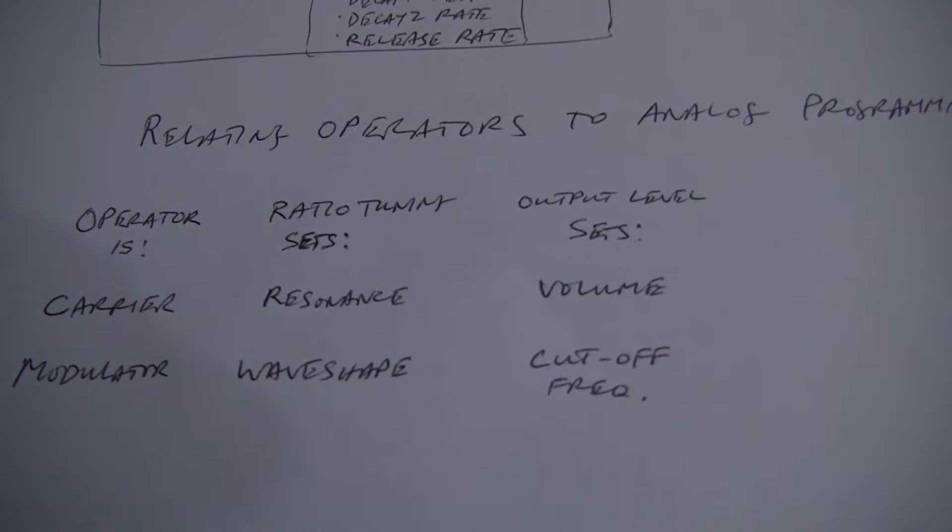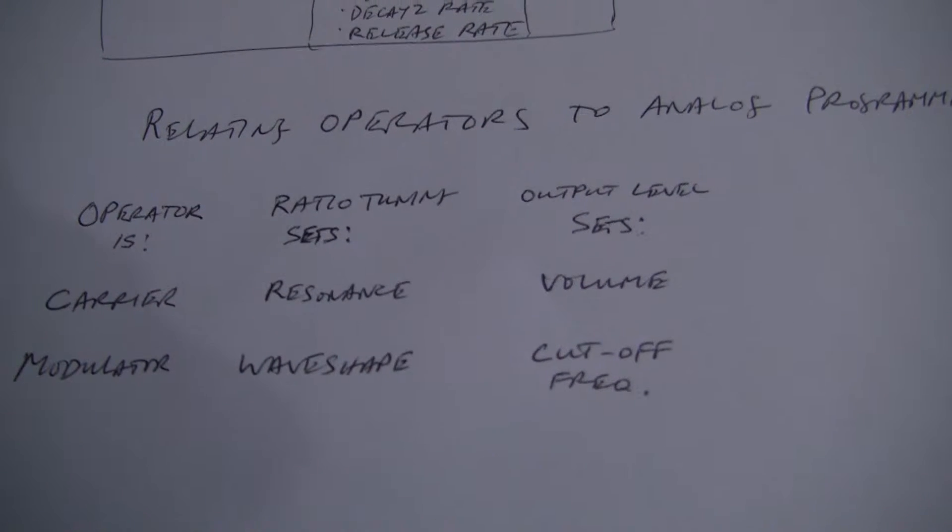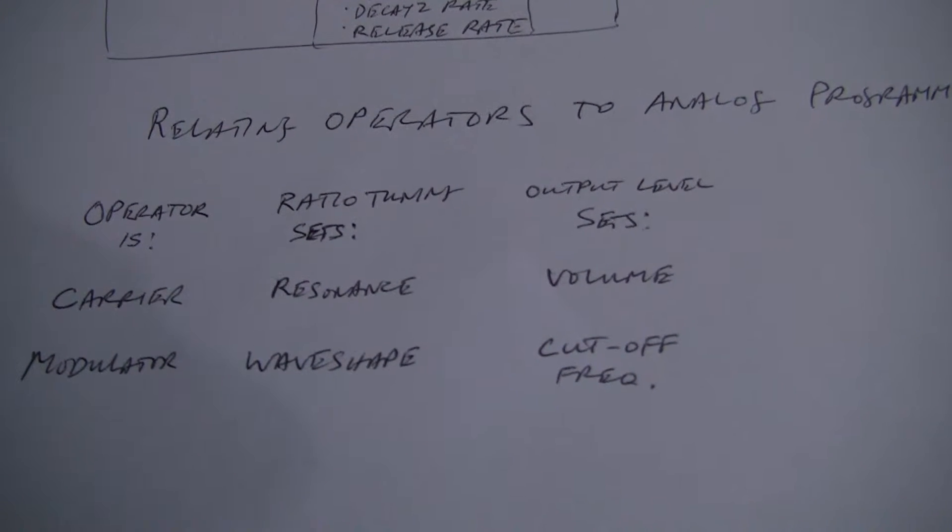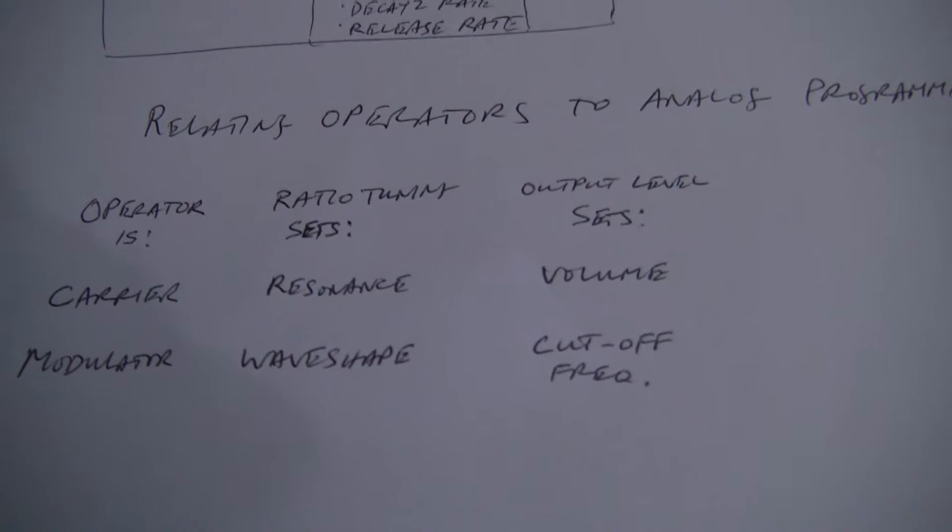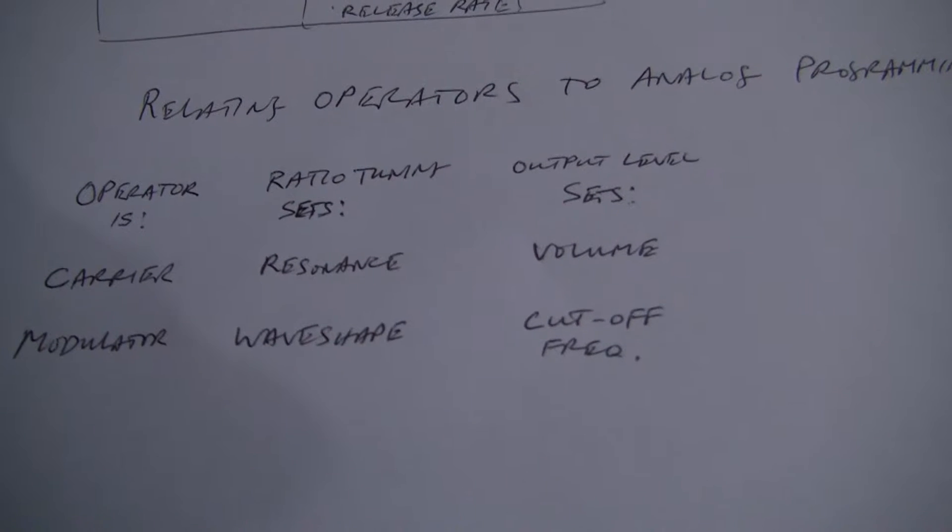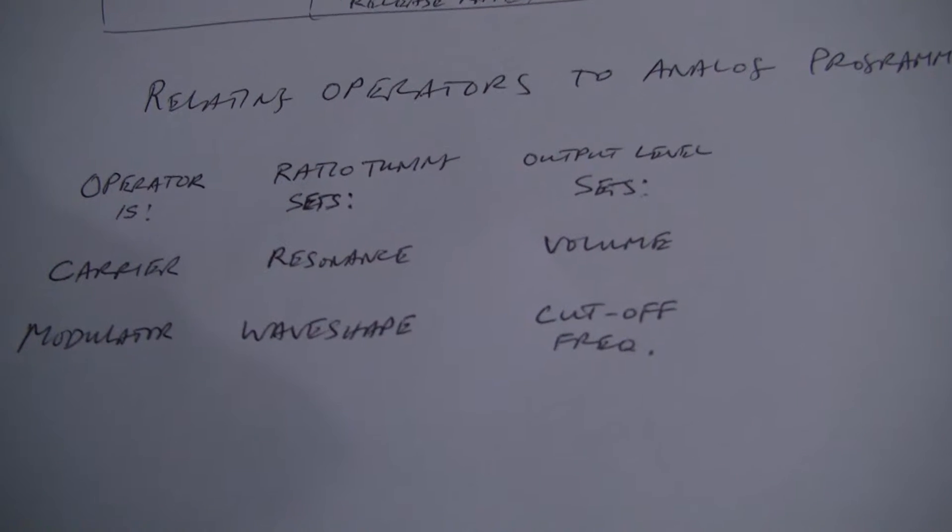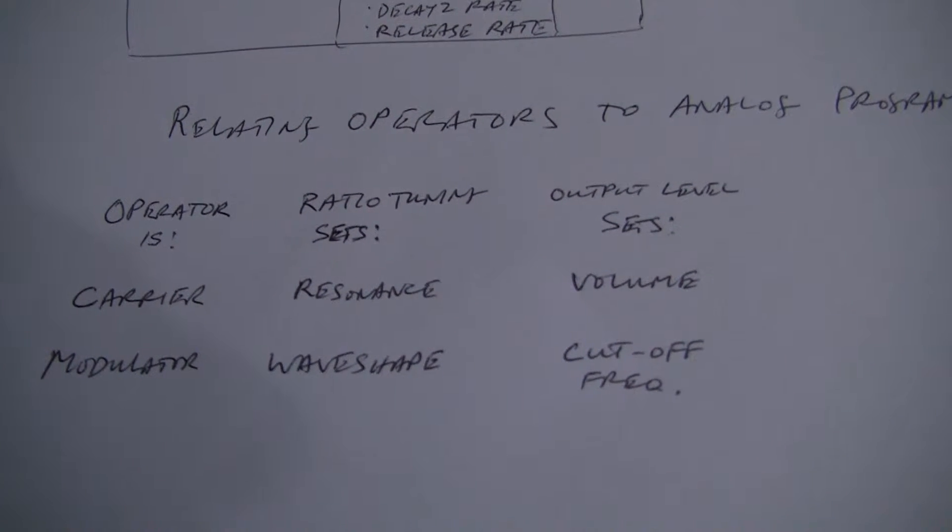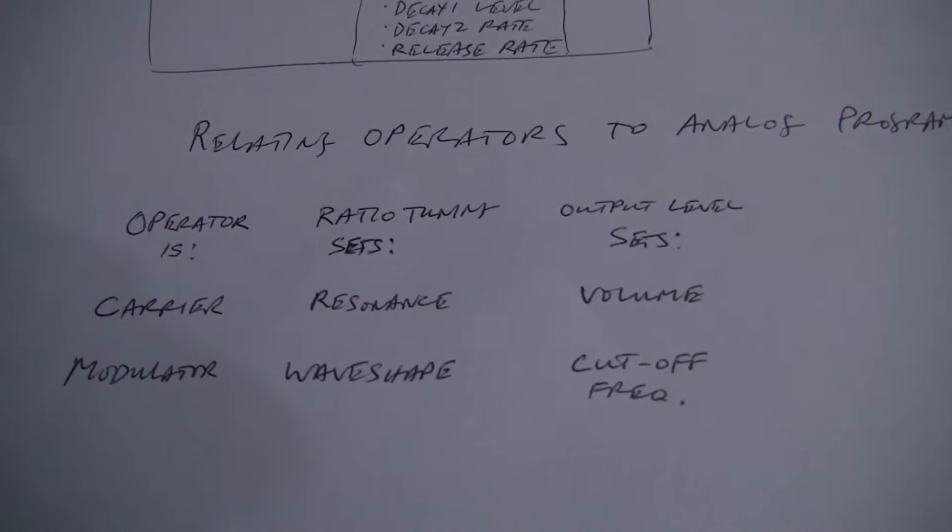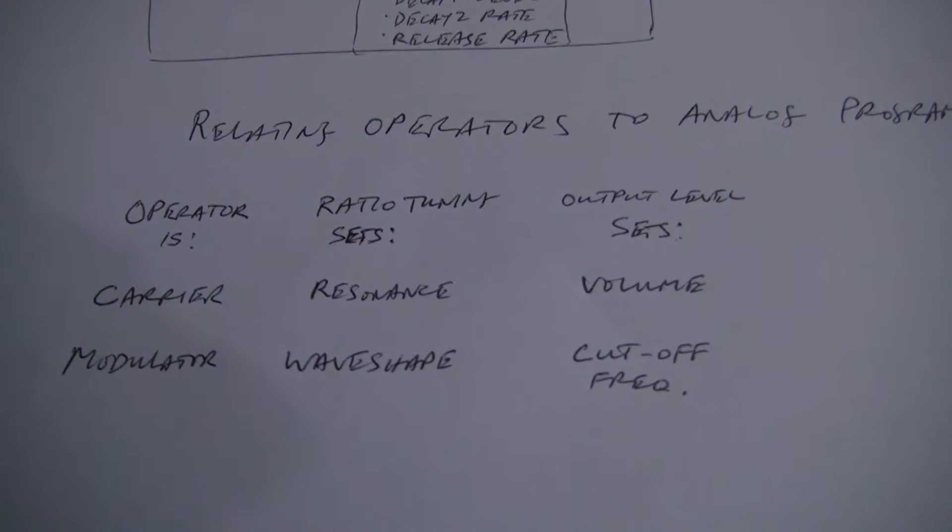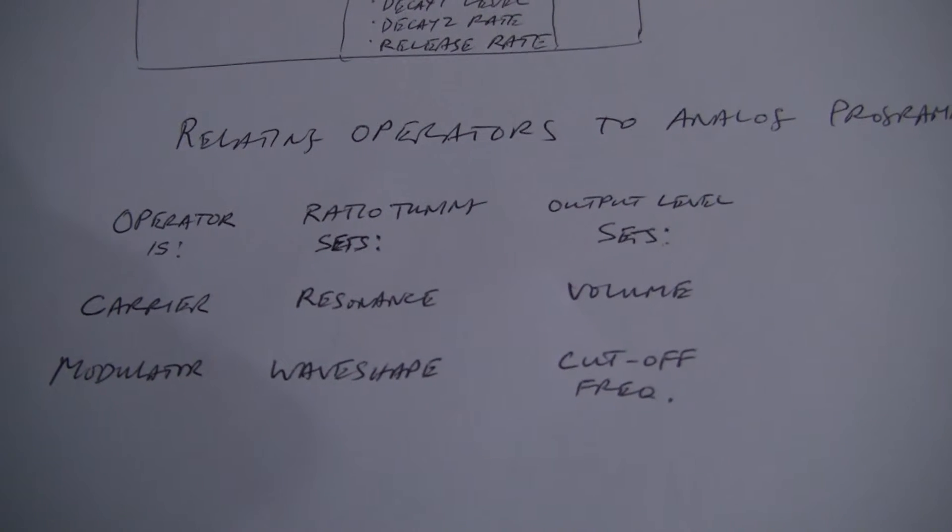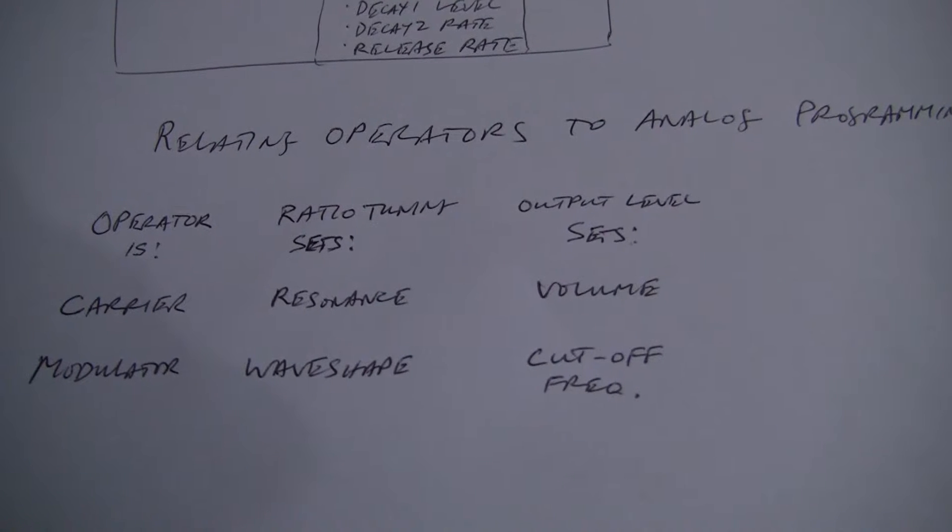So there, that sort of gives you a rough idea of how the digital equivalent of the filters, the analog filters, because normally you have cutoff and resonance and you pick a wave shape, harmonic-rich wave shape. So you've got everything you need there. And basically, everything is set up by just picking operator ratios and levels. So it's not as difficult as you might imagine.